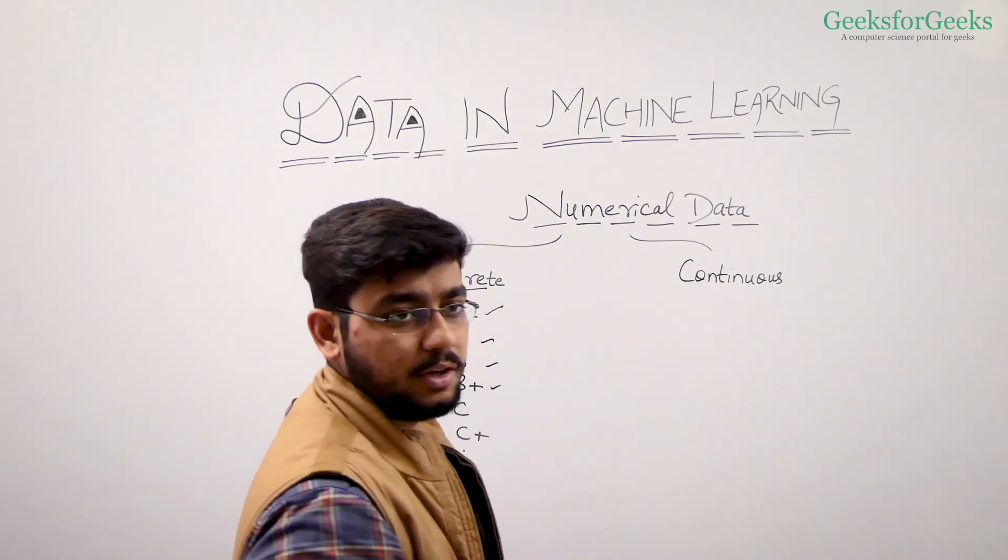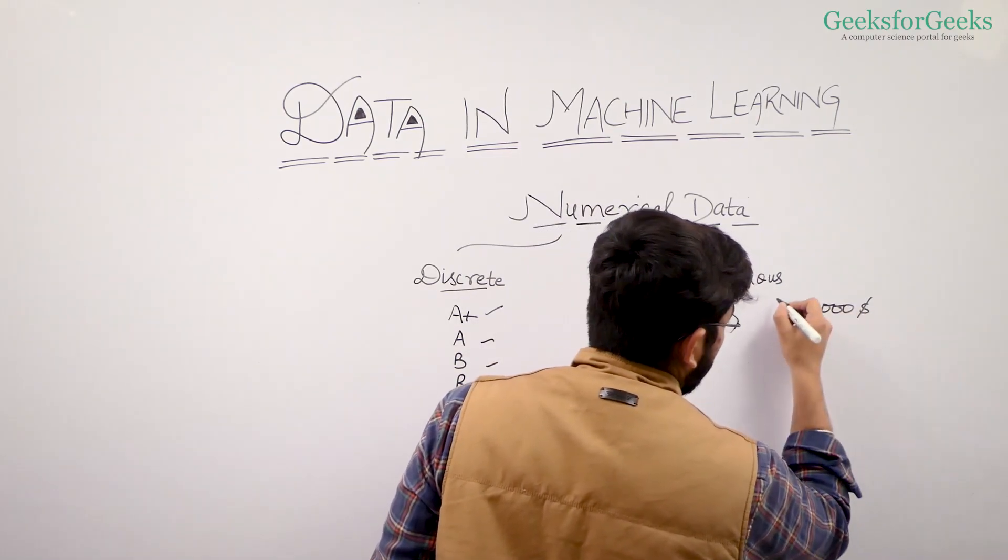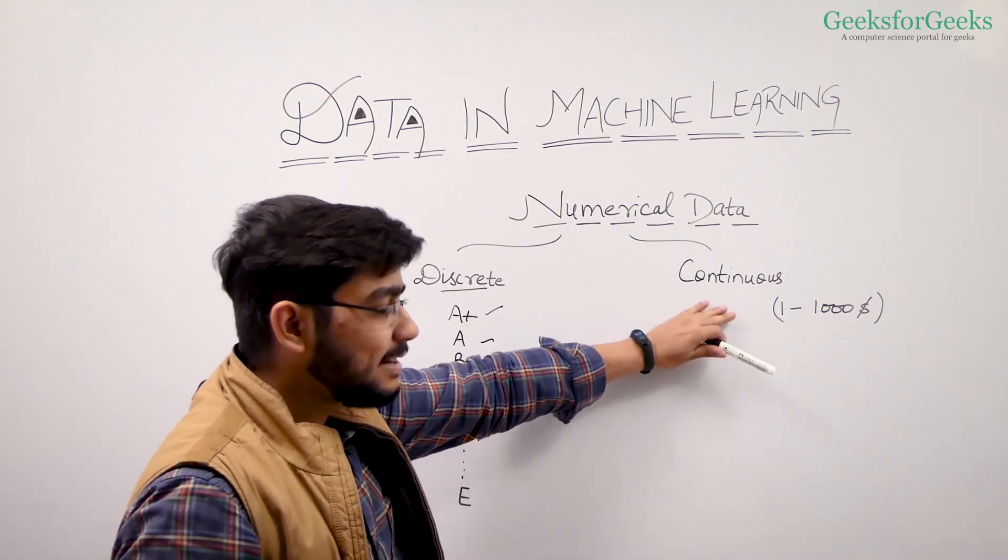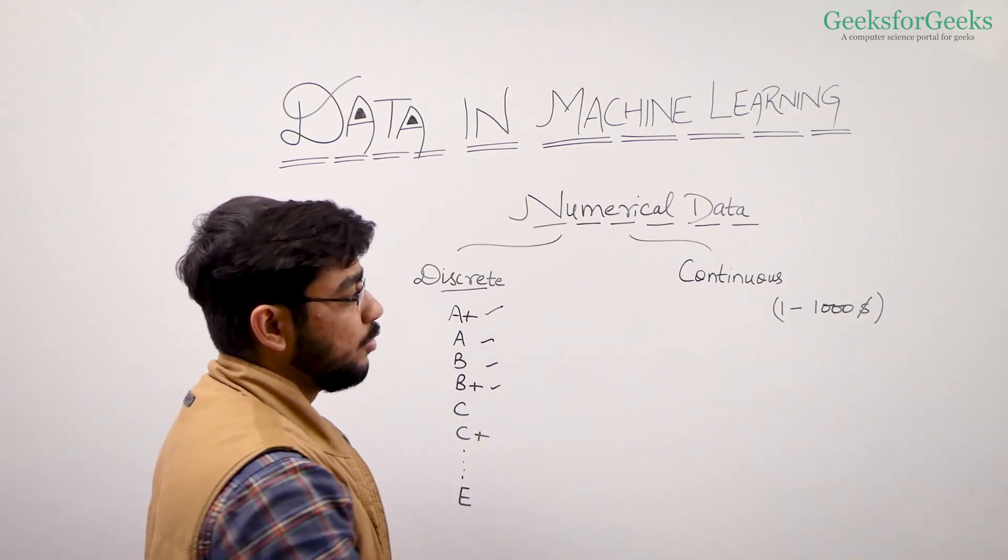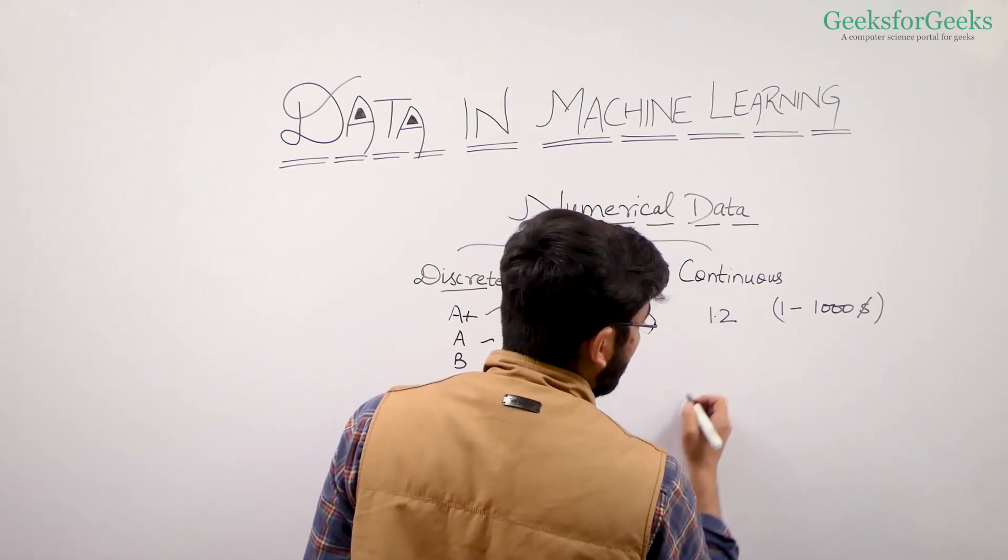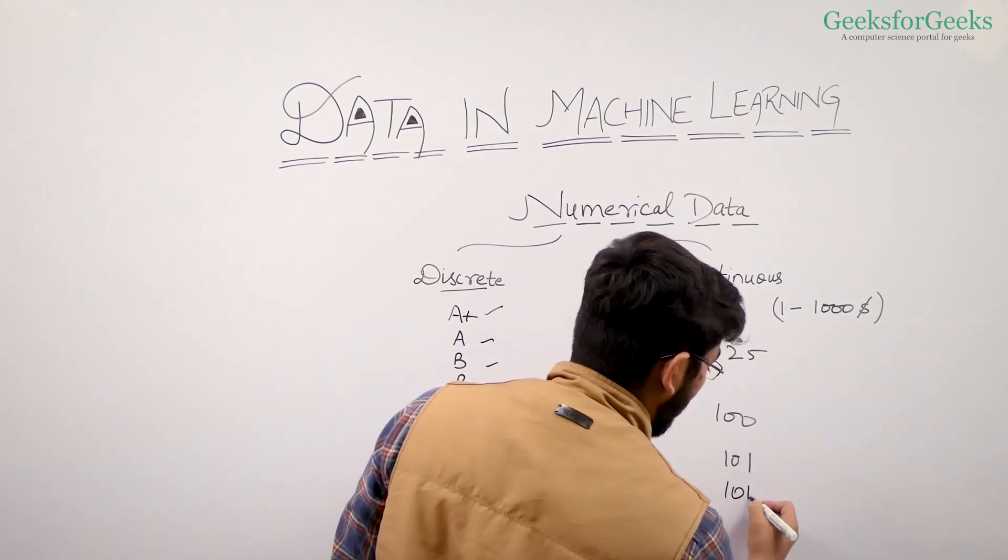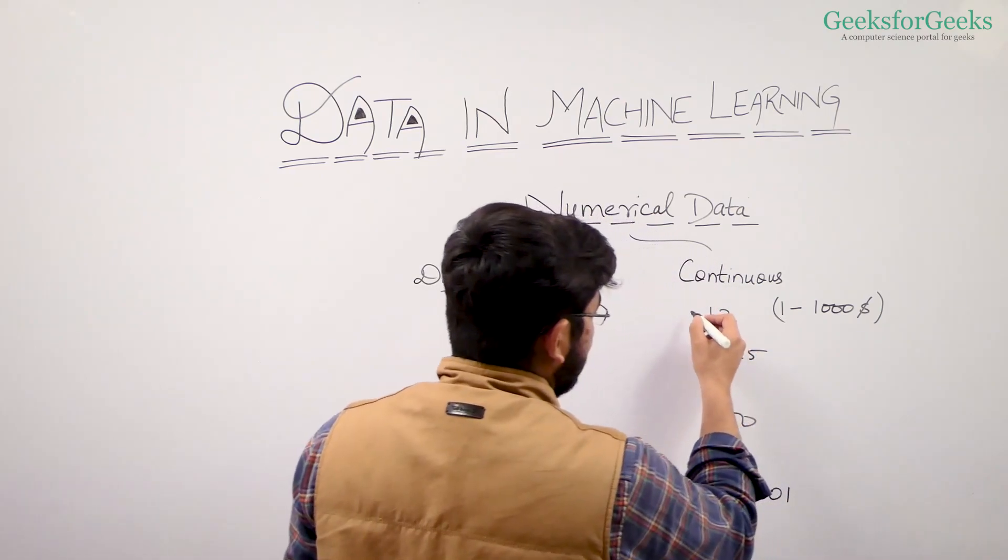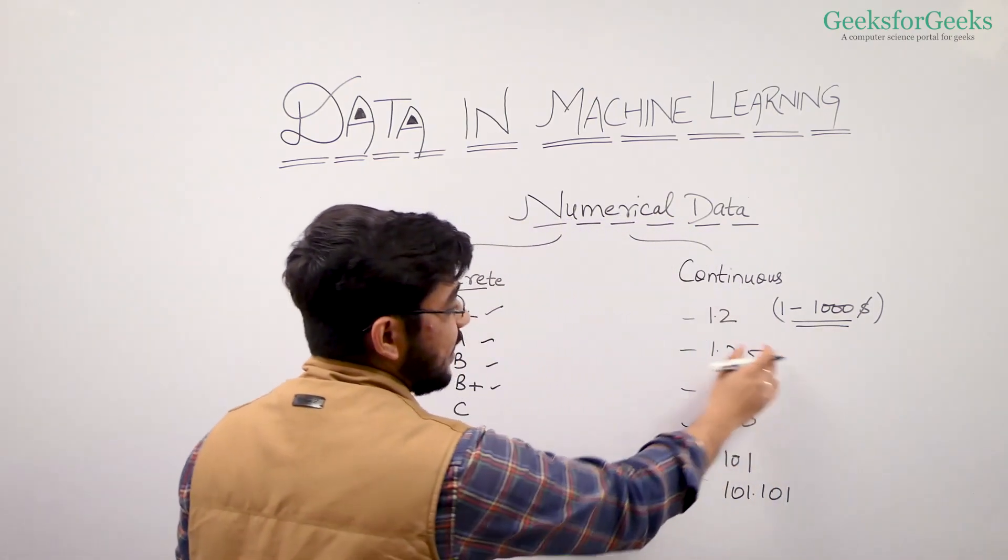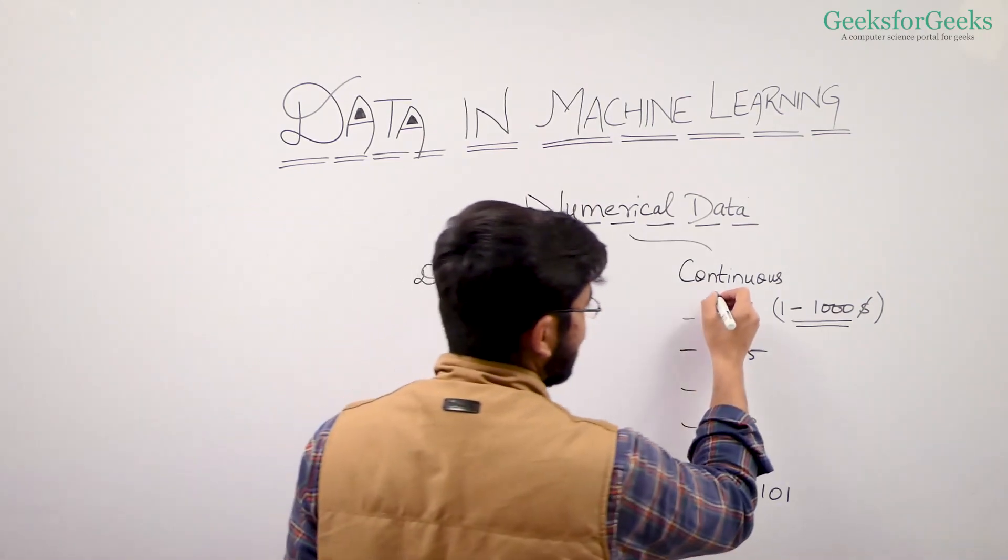But in case of continuous, we have a range. Let's say $1 to $1,000. This is the price of a gadget. This data can be any value from this range. It need not be discrete. It can be 1.2, 1.25, 100, 101, 101.101. These values are continuous in a range 1 to 1000. The data labels can be any value in this range. That's why we call it continuous data.